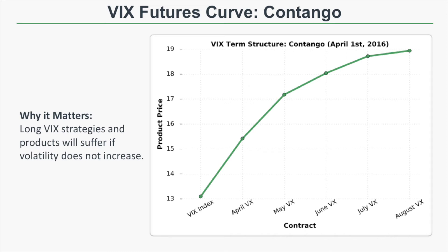Let's say you buy an April VIX call option with a strike price of 10, purchased on April 1st, 2016. In this example the VIX index is at 13 and the April VIX future is at 15.50. It's likely that you paid around five dollars and fifty cents for that April VIX call with a strike price of 10. Now if the VIX index stays at 13 through the April VIX futures settlement, that April VIX future is going to decay in price towards 13.